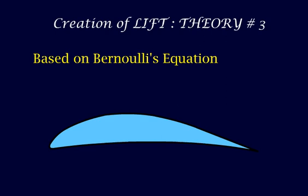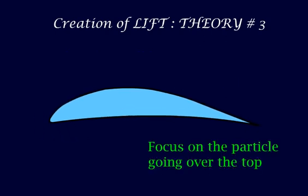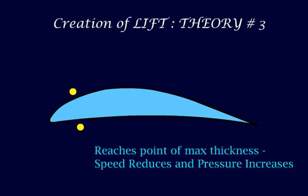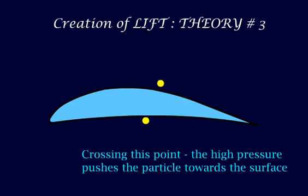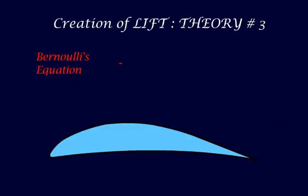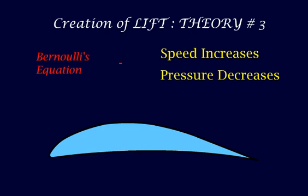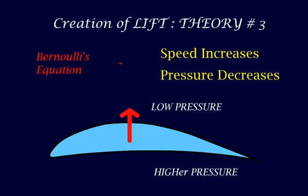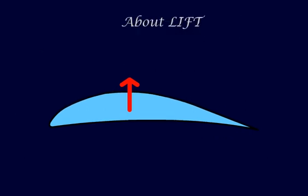Theory number 3 is based on Bernoulli's and Euler's equations. Focusing on the particle going over the top surface of the airfoil: as it reaches the point of maximum thickness the speed reduces and the pressure increases. This high pressure pushes the top particle towards the trailing edge of the airfoil, which increases the speed of the top particle. According to Bernoulli's equation, as the speed increases the pressure decreases, creating a low pressure at the top and a high pressure at the bottom. This pressure difference causes the lift force.